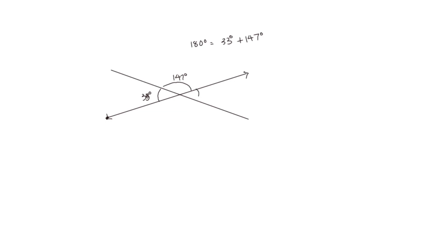Then we measure the next angle and find it's also 33 degrees, and the one after that is also 147 degrees. We notice that the angles opposite each other when the lines intersect are the same measurement — the 33 degree angles and on the opposite side the 147 degree angles. That's an important fact we can use to help solve for unknown angles.